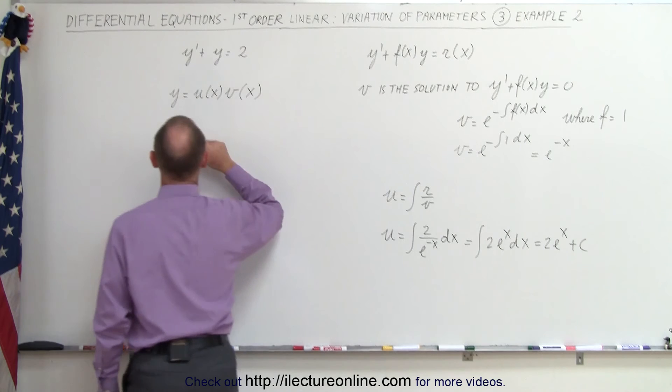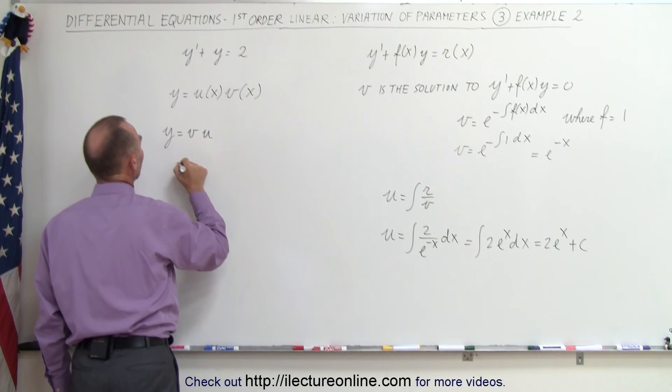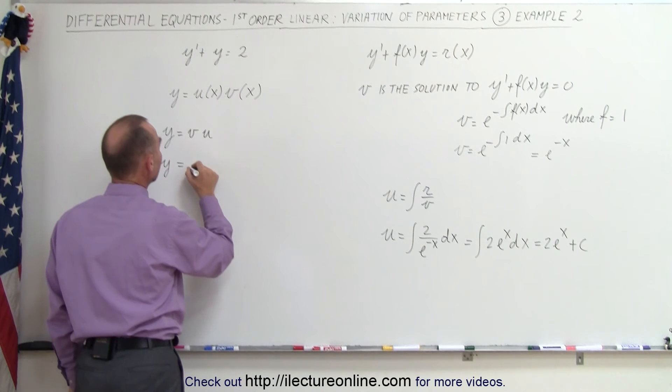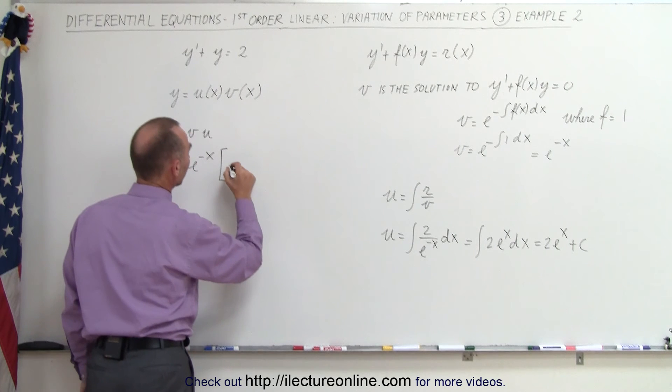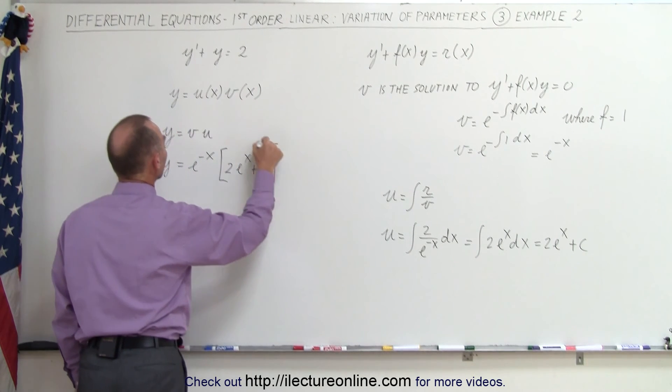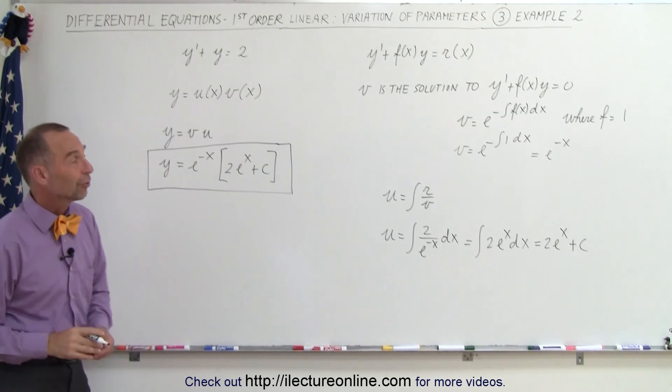This is equal to v. Coming over here, I can now say that y is equal to v times u. So therefore, y is equal to v, which is e to the minus x, multiplied times u, where u is equal to 2 e to the x plus a constant of integration. And so this method is fairly nice to use, and for an easy equation like this, pretty straightforward.